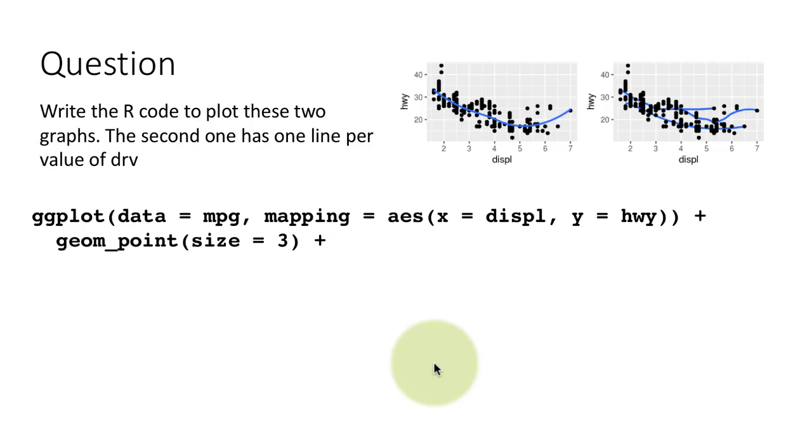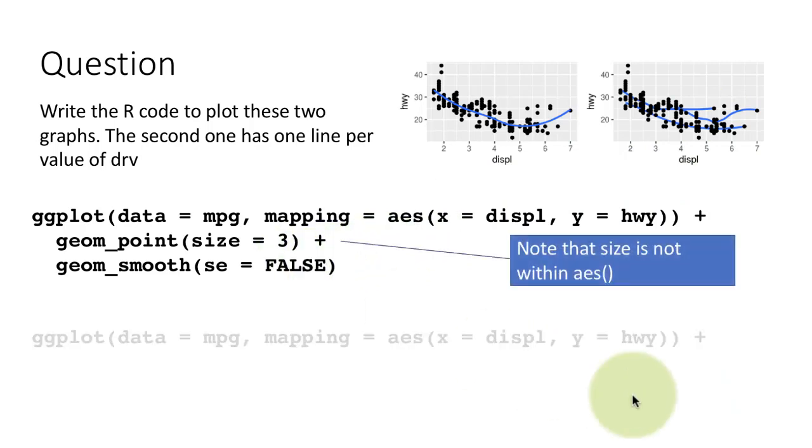And as I had said earlier, the second plot, geom_smooth, of course, we've got smooth. And se equals false, because there is no confidence intervals. So this is, as far as the first plot is concerned. For the second plot, everything is going to be almost the same, except that for geom_smooth, we're going to have the group aesthetic.